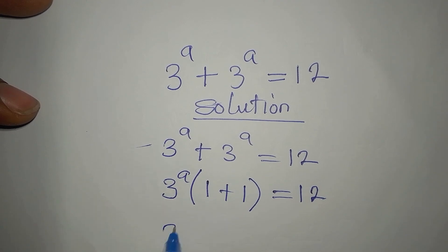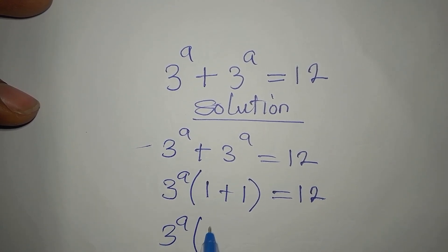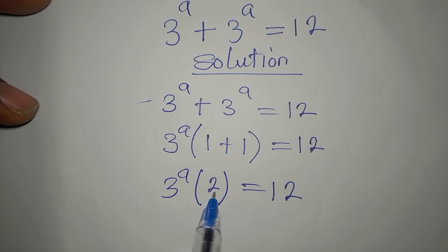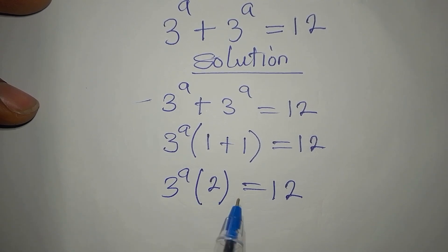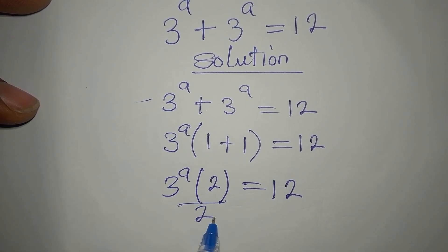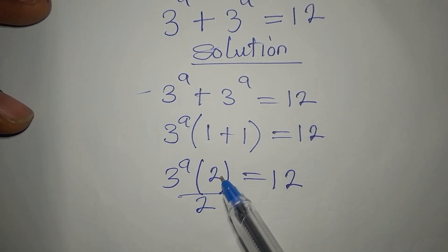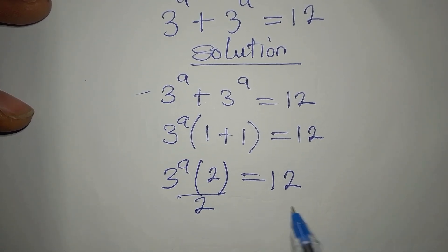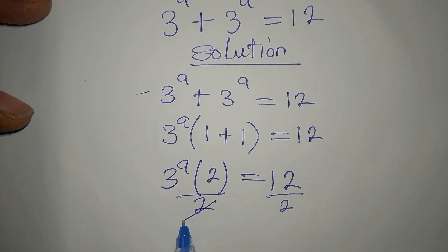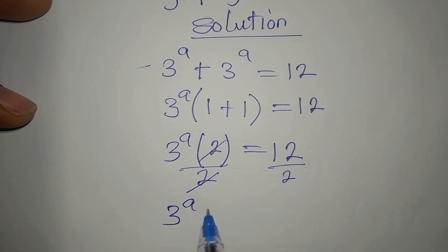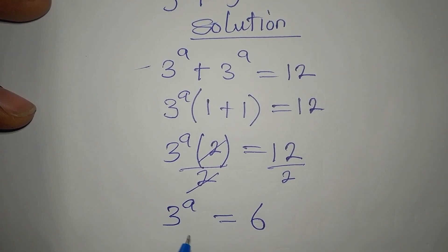Now, we have 3 to the power of a multiplied by 2 equals 12. Since we are multiplying these two, to remove one of them we can divide by the term that we want to remove. So, since we are removing 2, we divide by 2. So 2 will go from here. So, 3 to the power of a is equal to 6, 12 divided by 2.